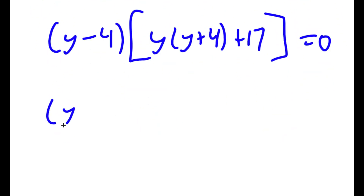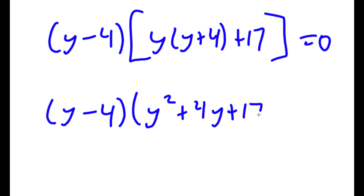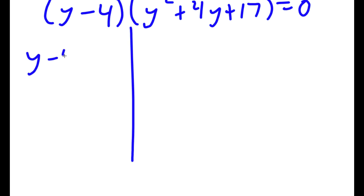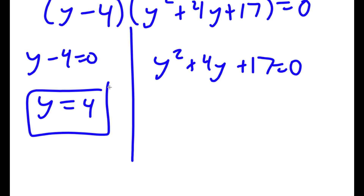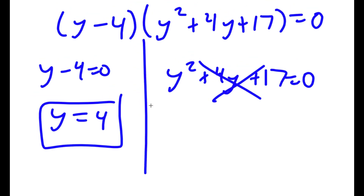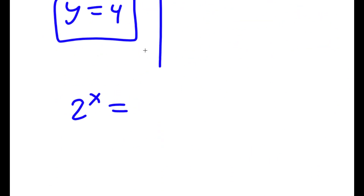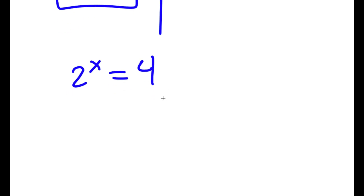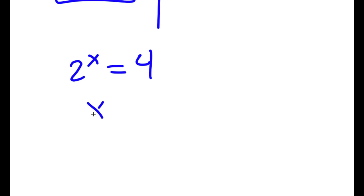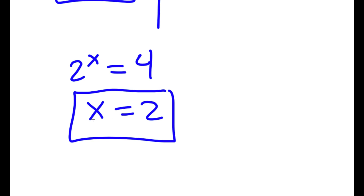This equals (y minus 4) times (y squared plus 4y plus 17) equals zero. This gives me two equations: y minus 4 equals zero, and y squared plus 4y plus 17 equals zero. For y minus 4 equals zero, y is obviously 4. For y squared plus 4y plus 17 equals zero, using the quadratic formula gives the square root of a negative number, so there is no real solution. Therefore y equals 4 is my only solution. Since 2 to the power of x equals y equals 4, and 2 squared equals 4, I get x equals 2.